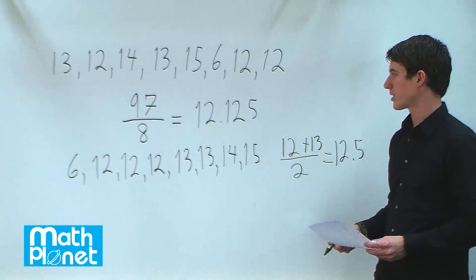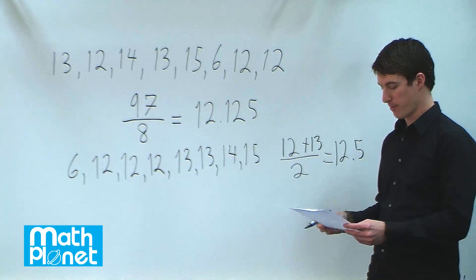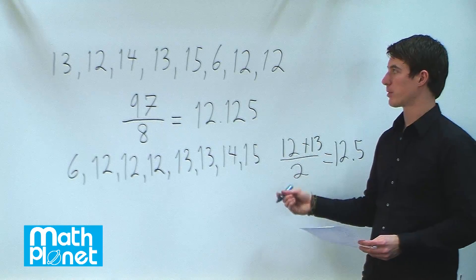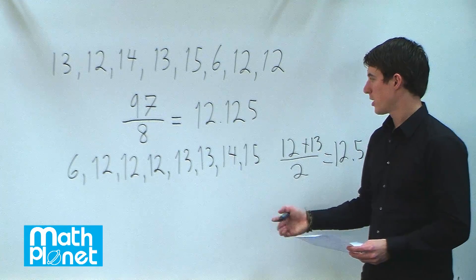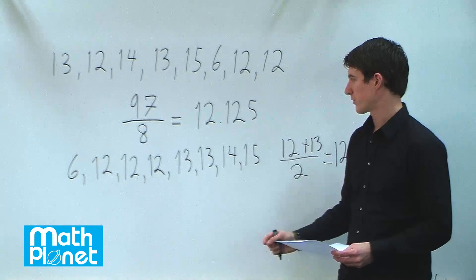Then there's one more definition that we might be interested in: the mode. The mode is the number that occurs the most number of times. So which number occurs the largest number of times?